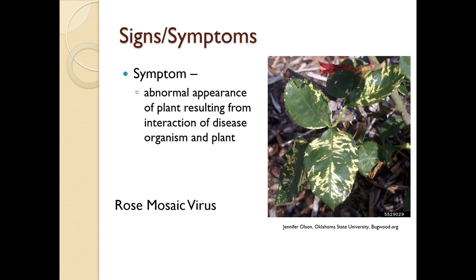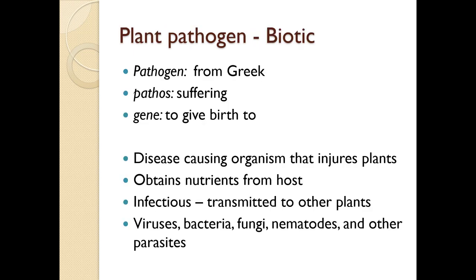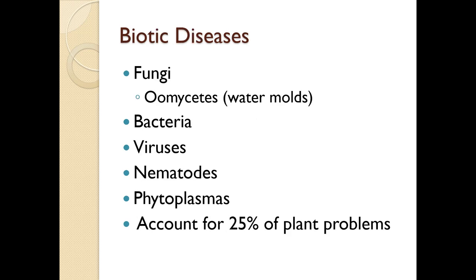A pathogen comes from the Greek: pathos means suffering, gene means to give birth to. These are disease-causing organisms that injure plants - they obtain their nutrients from the host, they're infectious, and they're transmitted to other plants. Viruses, bacteria, fungi, nematodes, and other parasites are included in this category.